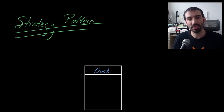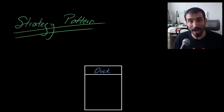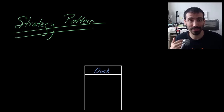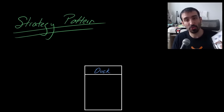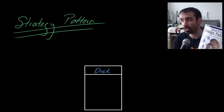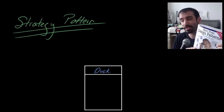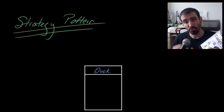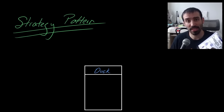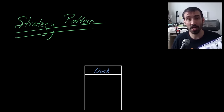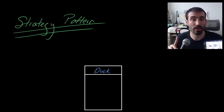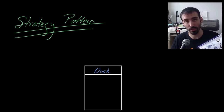In this video we're going to be talking about the strategy pattern in the context of software design. We're going to be talking about it by looking at it through the lens of the book Head First Design Patterns. This book references the design patterns coined by the Gang of Four — I'll put a link to that book up here if you're interested.